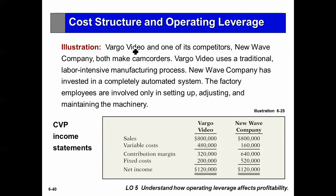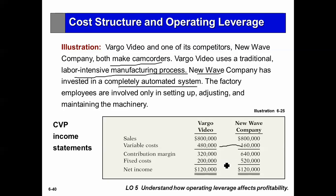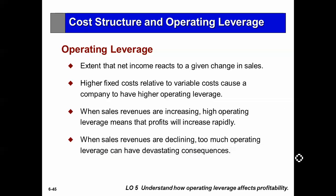Vargo and its competitor New Wave Company both make camcorders. Vargo uses a traditional labor-intensive manufacturing process — variable costs are $480 and fixed costs are $200,000. New Wave has a completely automated system — variable costs are much lower at $160 versus $400 for Vargo, but fixed costs are a lot higher. Both companies have the same sales and the same net income, but a different cost structure: Vargo has high variable costs and low fixed; New Wave has low variable costs and high fixed. Operating leverage is the extent to which net income will increase or decline with a change in sales.